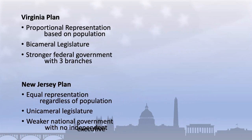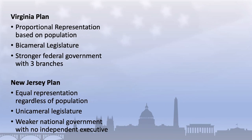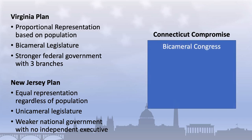The debate between the larger and smaller states over congressional representation dominated early debates at the Constitutional Convention and prevented the convention from making progress in other areas. After a month of debate, Roger Sherman of Connecticut proposed what would be referred to as the Connecticut Compromise, or the Great Compromise. The Connecticut Compromise took Virginia's idea of a bicameral legislature, but rather than allocating seats in each chamber based on population—